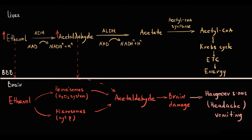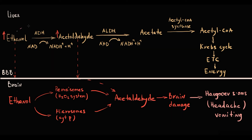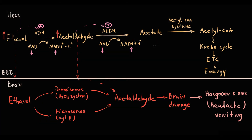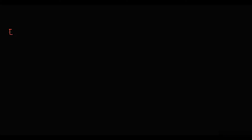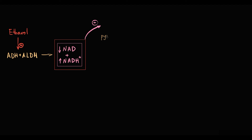Ethanol metabolism causes alterations in liver tissue. Ethanol stimulates the activity of alcohol dehydrogenase and acetaldehyde dehydrogenase, and because both enzymes require a huge amount of NAD+, this causes an increase in NADH and a decrease in NAD+ levels in liver tissue. This ethanol-induced high NADH/NAD+ ratio stimulates conversion of pyruvate to lactate, resulting in lactic acidosis.